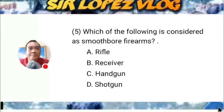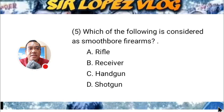Question number five: Which of the following is considered a smooth bore firearm? A) rifle, B) receiver, C) handgun, or D) shotgun?